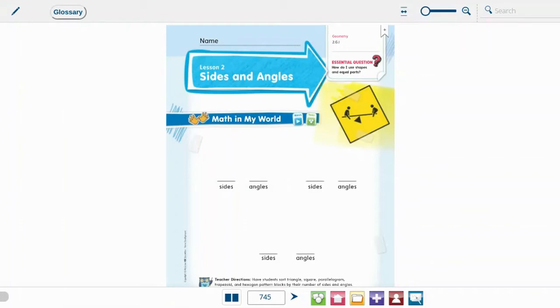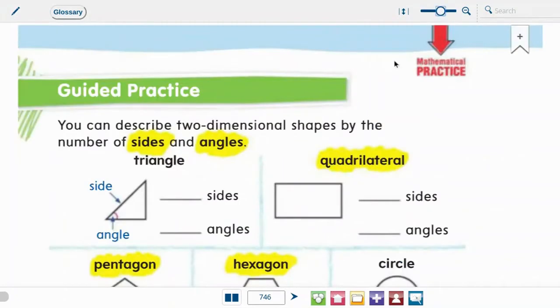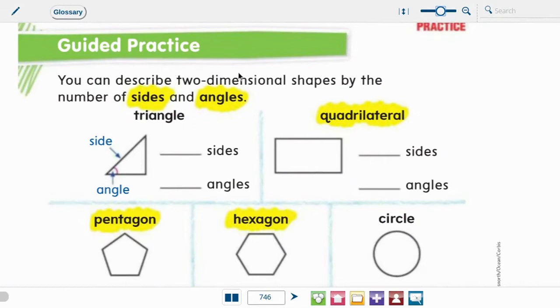We're starting off today on page 745. So if you're not there, go ahead and turn in your book right now with me to page 745 as we start talking about sides and angles. I'm going to turn to the next page, 746. I'm going to zoom in so we can start reading during our guided practice. It says, you can describe two-dimensional shapes by the number of sides and angles.